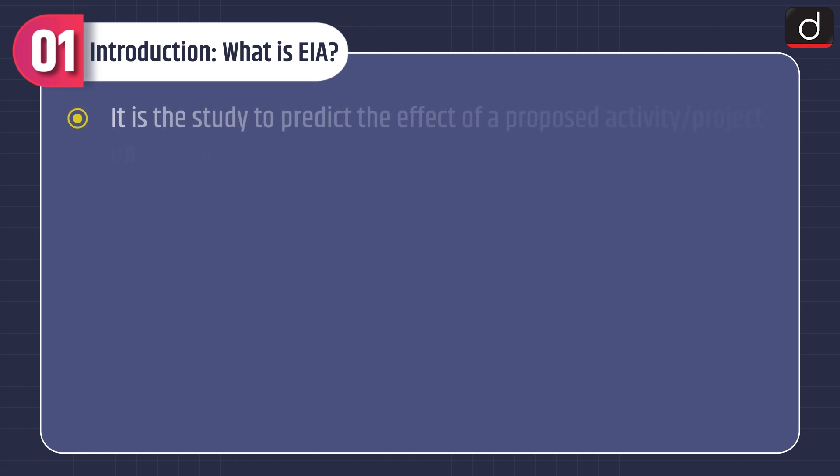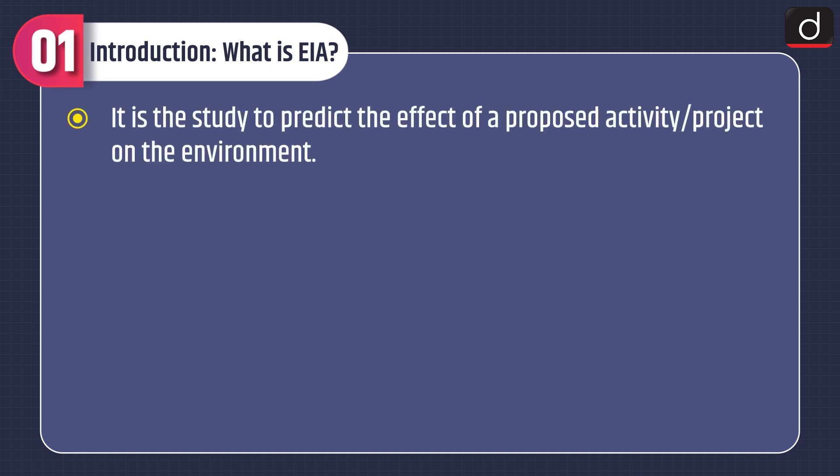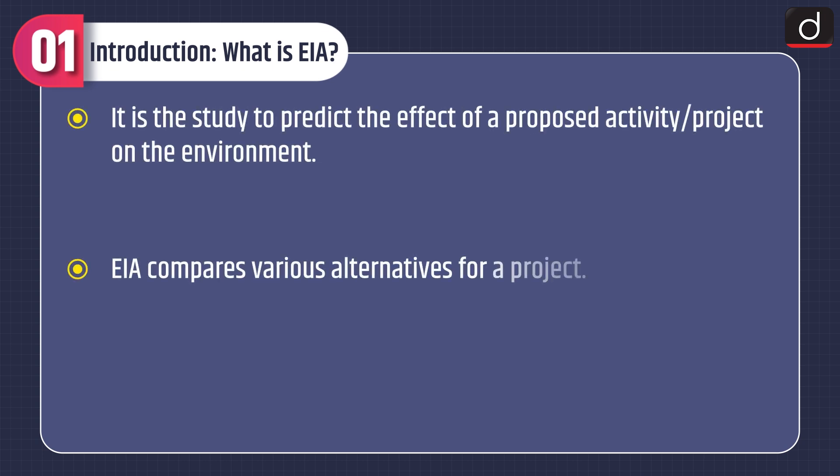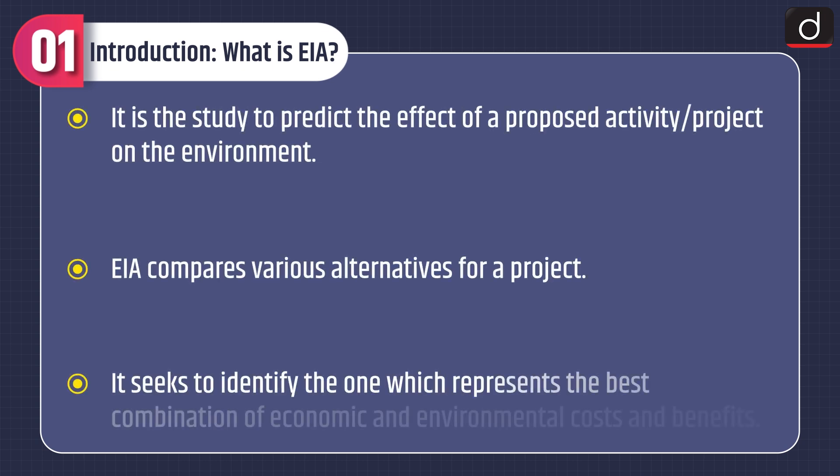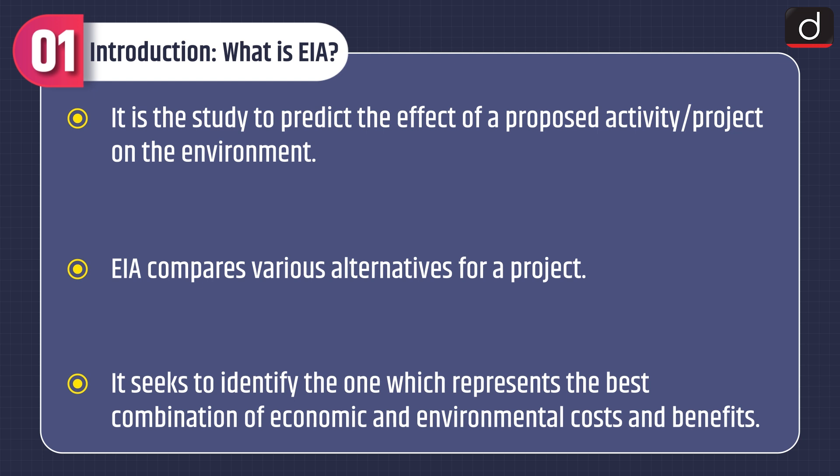First of all, let's discuss what is EIA. It is the study to predict the effect of a proposed activity or project on the environment. EIA compares various alternatives for a project and seeks to identify the one which represents the best combination of economic and environmental costs and benefits.